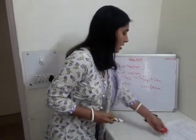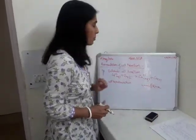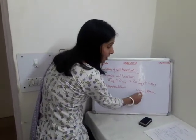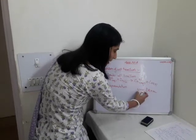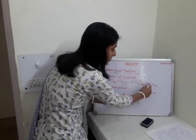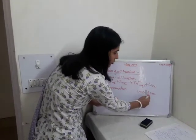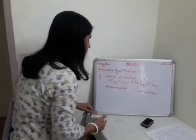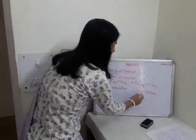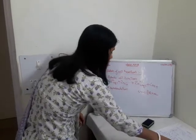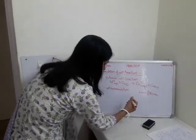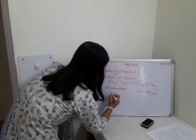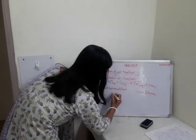For the cell reaction, children, you need to keep one thing in mind. The left hand half cell should be written on the left hand side, separated by a double slash, and then the right hand half cell. The left hand reaction is oxidation.